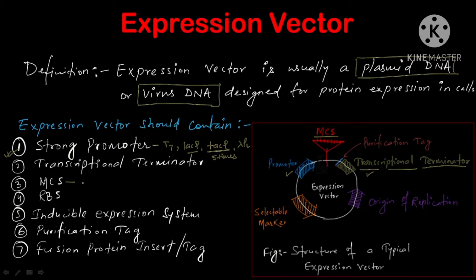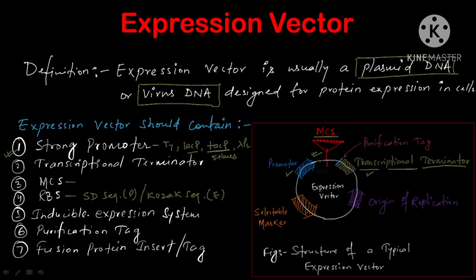We can insert our gene of interest into the MCS and it can be expressed. Apart from that, we should have an RBS — ribosomal binding site — just before the gene of interest and after the promoter sequence. The RBS should be the SD (Shine-Dalgarno) sequence in prokaryotes, whereas if you would like to have a eukaryotic host, we should use the Kozak sequence, so that the ribosome can bind efficiently and translate into the specific peptide.